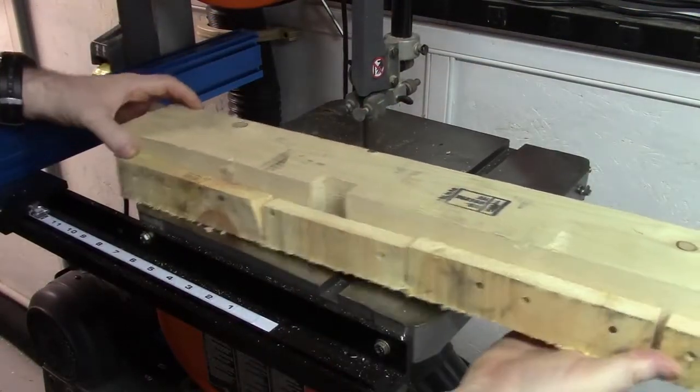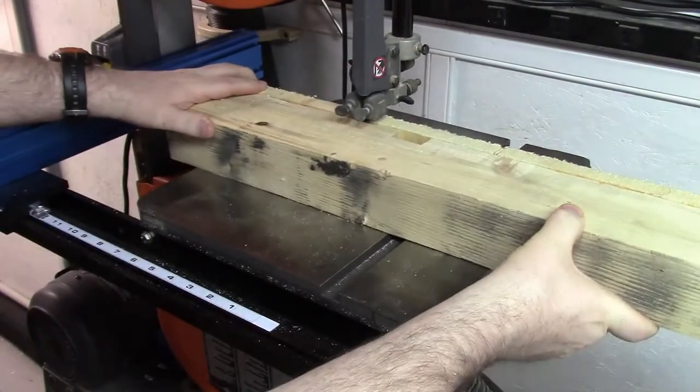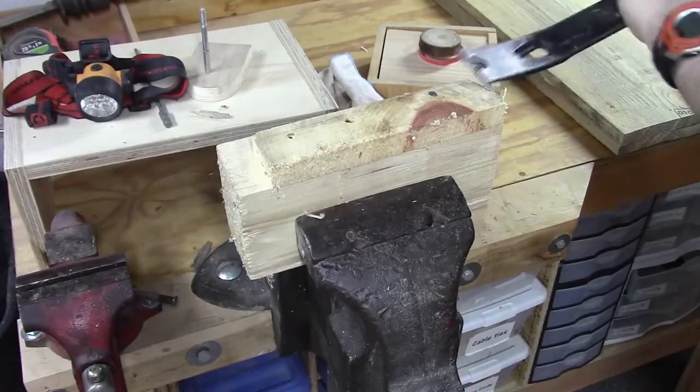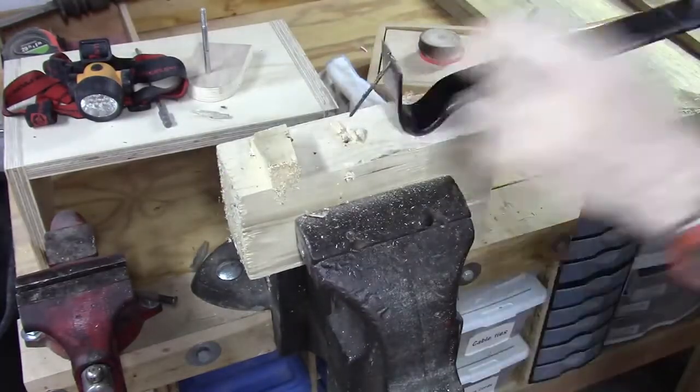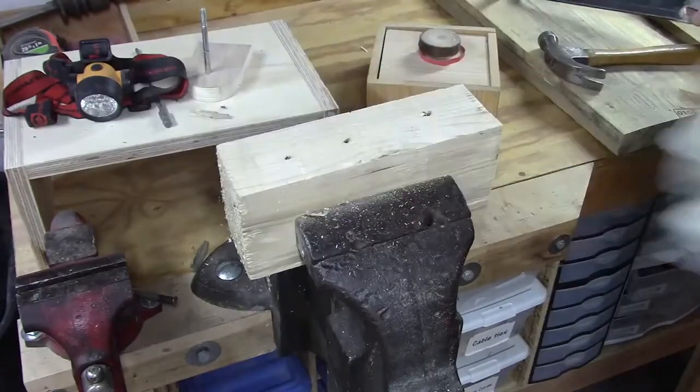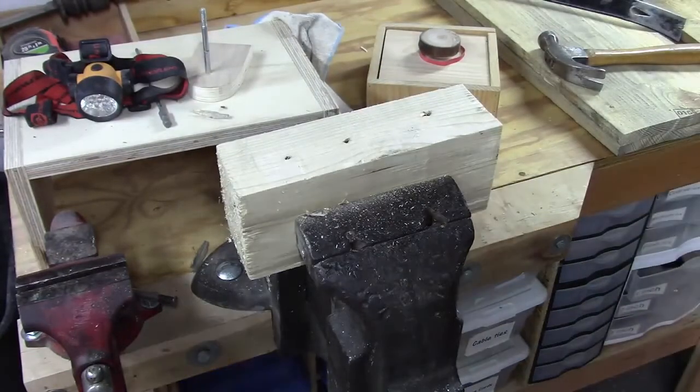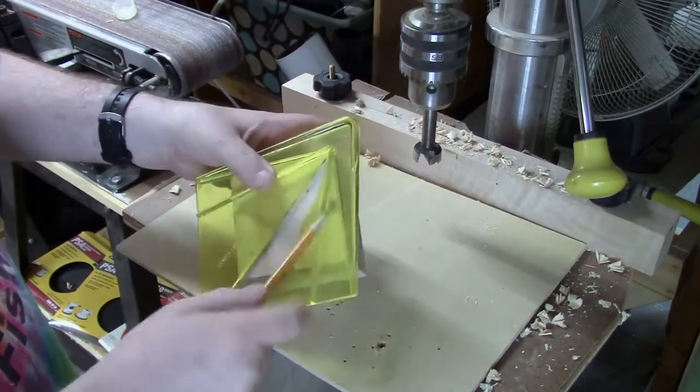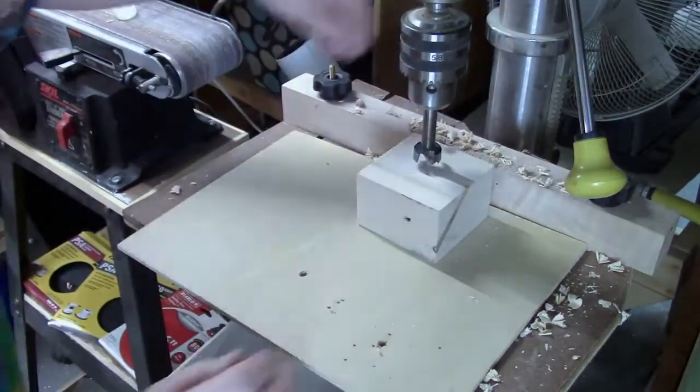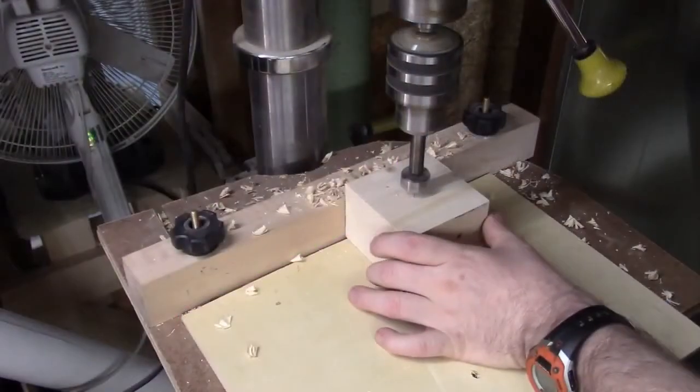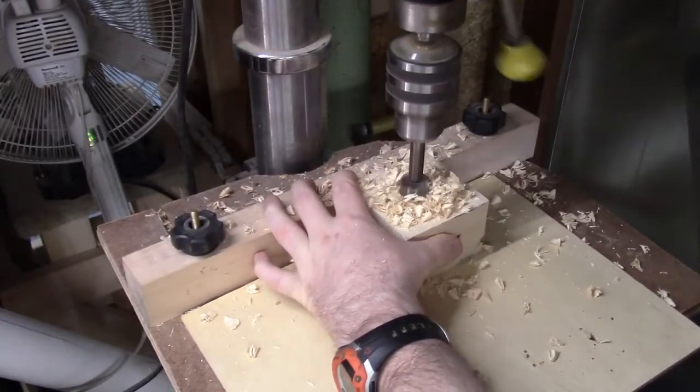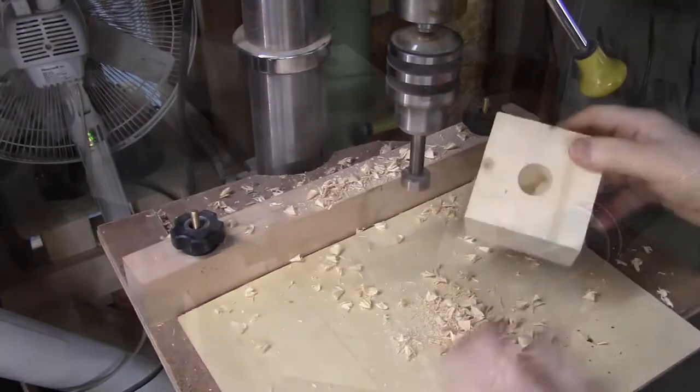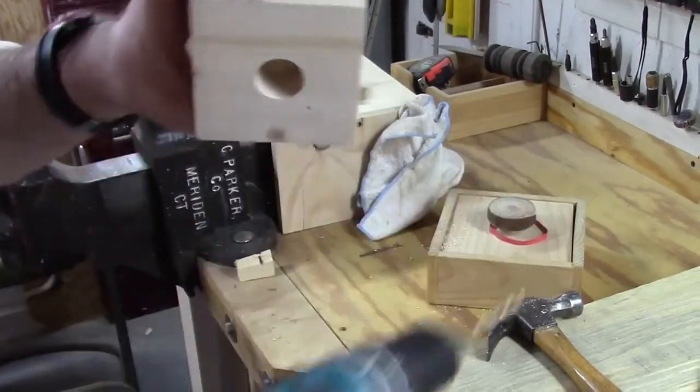I'm gonna start off with a runner from a pallet. Just cleaning it up there, pulling out the nails, finding center. I set my depth to one inch. I drilled a little access hole so I can pop it out easily.